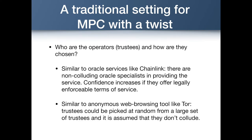So who are these trustees and how are they chosen? There can be two options. One is similar to Oracle services like Chainlink — there are non-colluding Oracle specialists providing the service, and confidence increases if they offer legally enforceable terms of service. The other option is similar to anonymous web browsing tools like Tor, where trustees could be picked at random from a large set, and it is assumed that they don't collude.